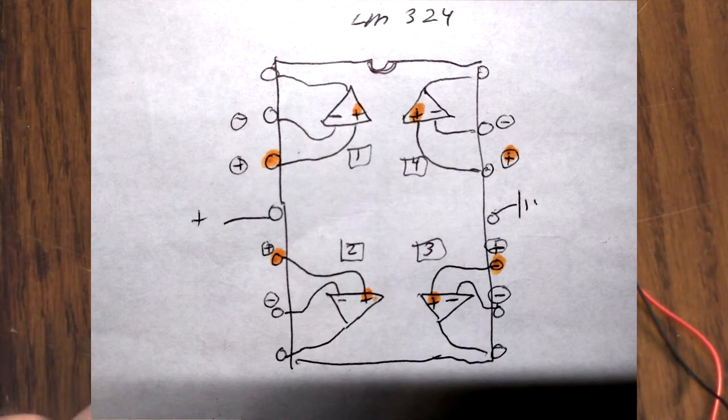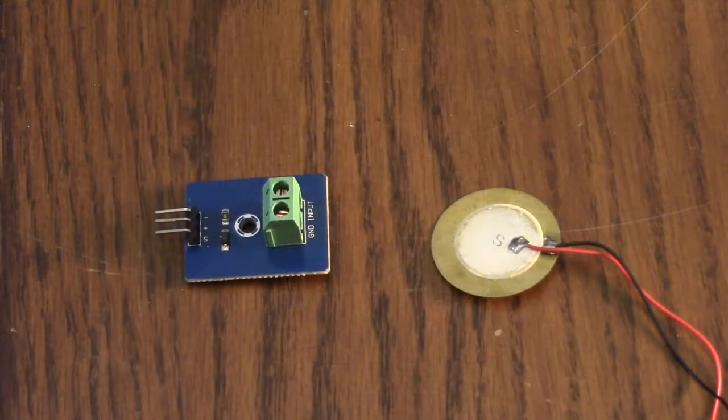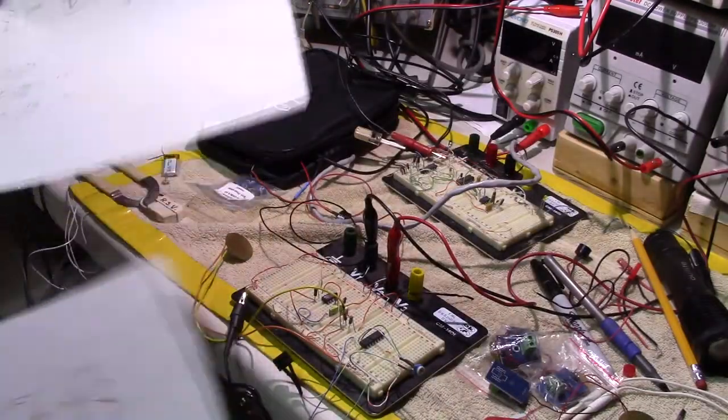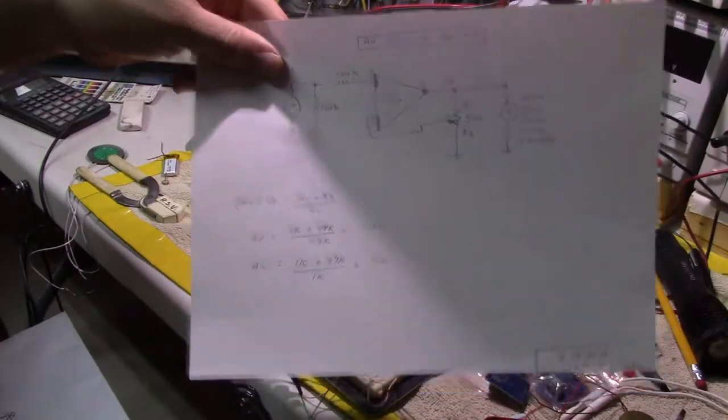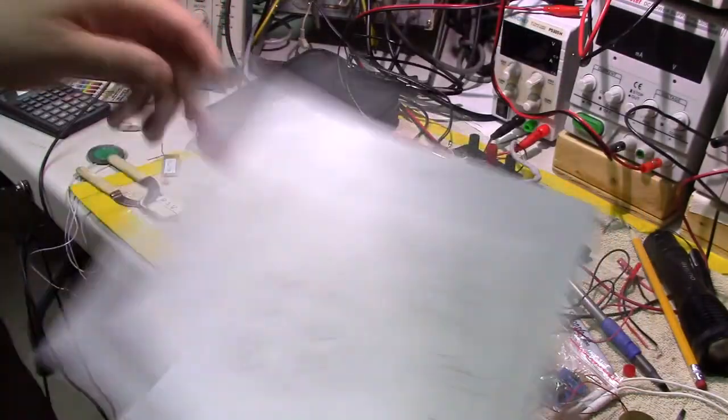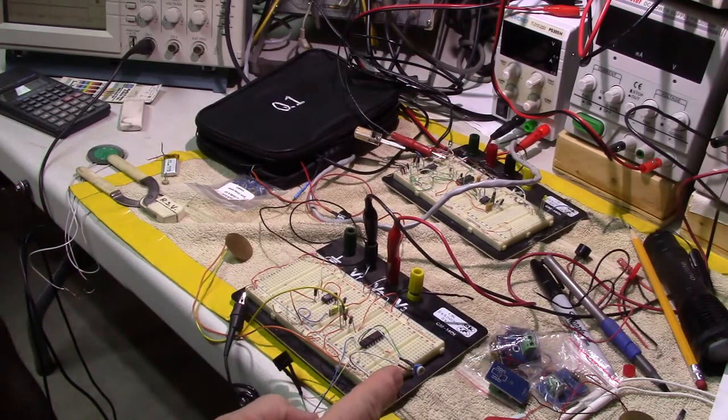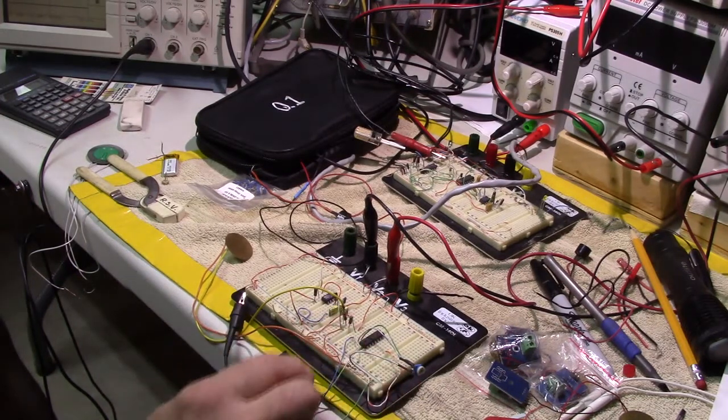Here I have my circuit breadboarded that I showed you with the LM324. Here's the adjustment of the sensitivity, there's the LM324, here's a little 5 volt transducer that has a little built-in oscillator in it.